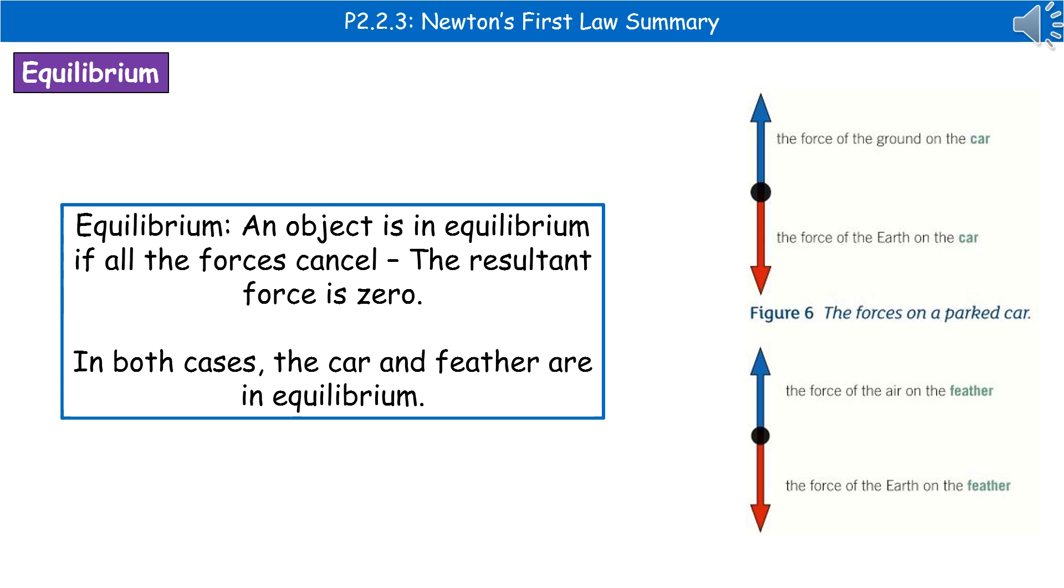So I've given you two examples on the right of the free body diagrams we could see for these. The top one is a car. So we've got the force of the ground on the car upwards, and the force of the earth on the car downwards. And those are the same size force in opposite directions. Therefore, resultant force is zero.